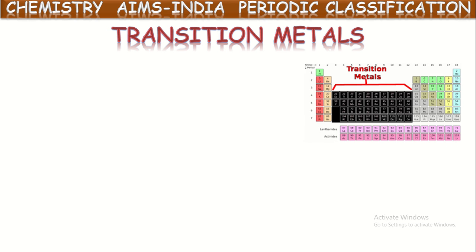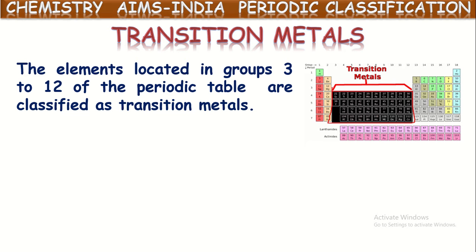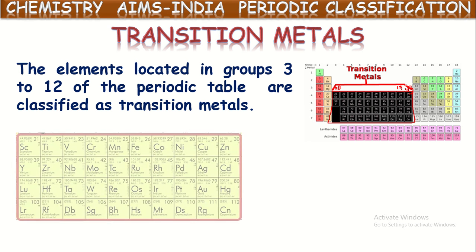Next, transition metals. The elements present between the S block and P block elements — the 10 columns in the middle — are called transition elements. The elements located in groups 3 to 12 of the periodic table are classified as transition metals. So from 3B, 4B, 5B, 6B, 7B, then 8B which covers the 8th, 9th and 10th columns, then 1B and 2B — these 8 groups are there in the middle.